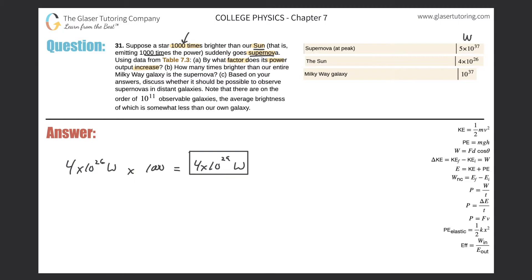So the wattage of a supernova is 5 times 10 to the 37 watts. And we want to find out how much it increases when the sun itself has a wattage of 4 times 10 to the 29. So basically we do a simple division here. This would be 4 times 10 to the 29 watts on the bottom.